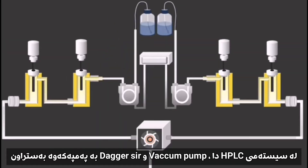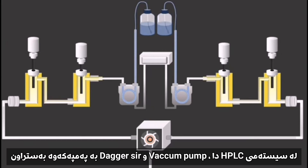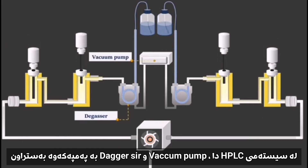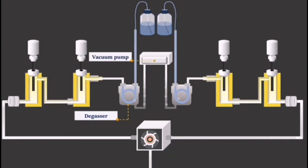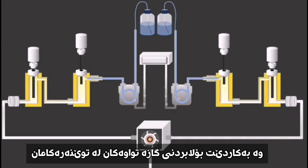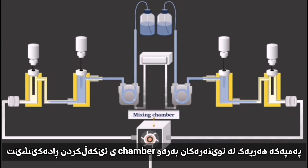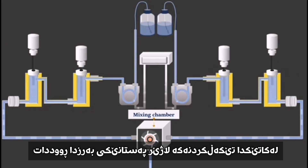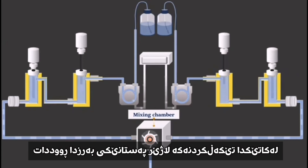In the HPLC system, a vacuum pump and a degasser are connected to the pump and used to remove dissolved gases from the solvents. The pump drives each solvent to the mixing chamber, where mixing takes place under higher pressures.